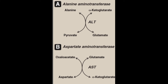The two main aminotransferases are alanine aminotransferase and aspartate aminotransferase. Alanine aminotransferase uses the amino acid alanine, converting it into pyruvate, while converting alpha-ketoglutarate into glutamate. Aspartate aminotransferase uses aspartate, converting it into oxaloacetate, while also converting alpha-ketoglutarate into glutamate.